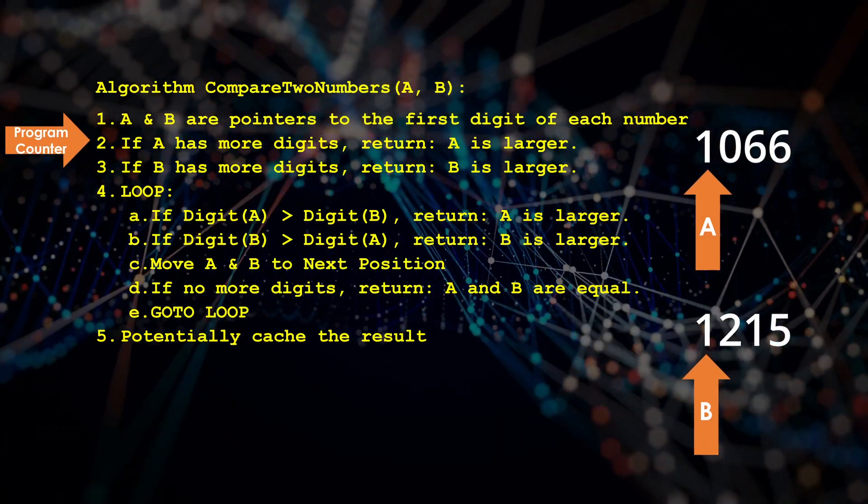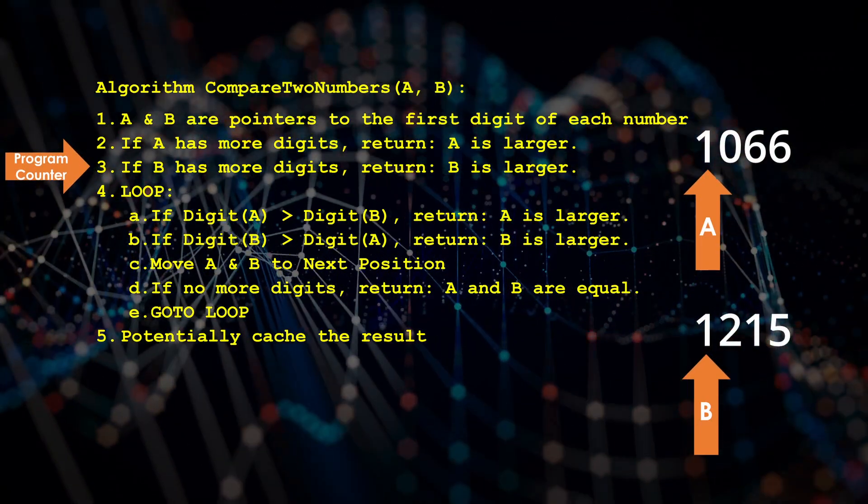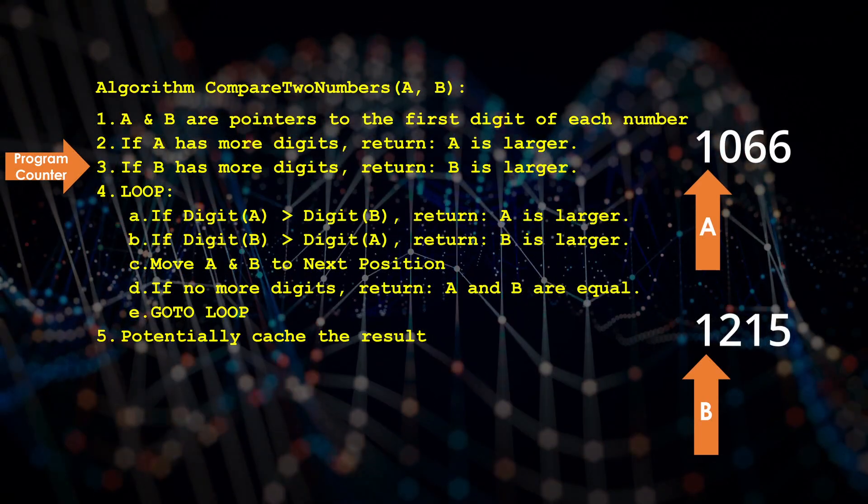Now if number A has more digits, return that A is larger. If B has more digits, return that B is larger.